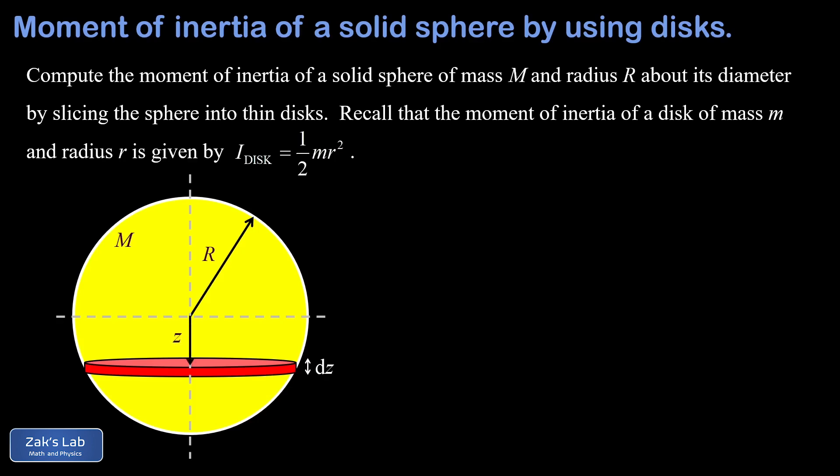There's z indicating the vertical position of this slice where we're using the center of the ball as our origin. As a quick reminder, the distance from the center of the sphere to the edge of the disk is still the radius big R.